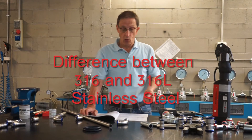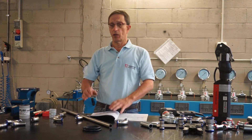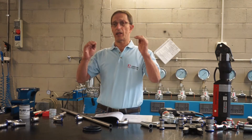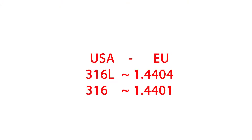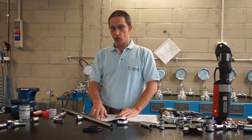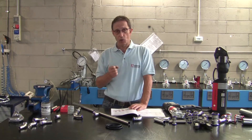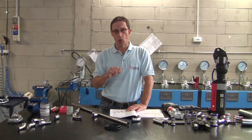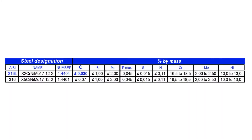AISI 316L stainless steel, named according to the classification of the American Iron and Steel Institute, is almost completely equivalent to 1.4404 stainless steel, named according to the European classification. AISI 316, on the other hand, basically corresponds to type 1.4401 under European standards. There are slight differences between American and European standards — they do not correspond exactly.